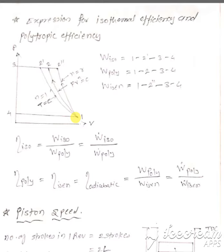We have already discussed the PV Diagram for Isothermal Process, Polytropic Process, and Isentropic Process.